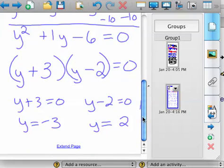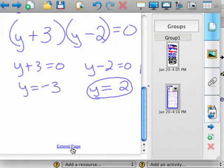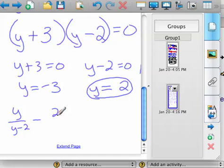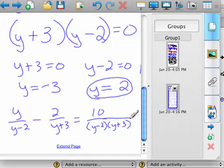If you take this 2 and plug it into the original equation, which was y over y minus 2, just the first part, minus 2 over y plus 3 equals 10 over, factored, y minus 2, y plus 3. Here's a case where we need to plug these back in.